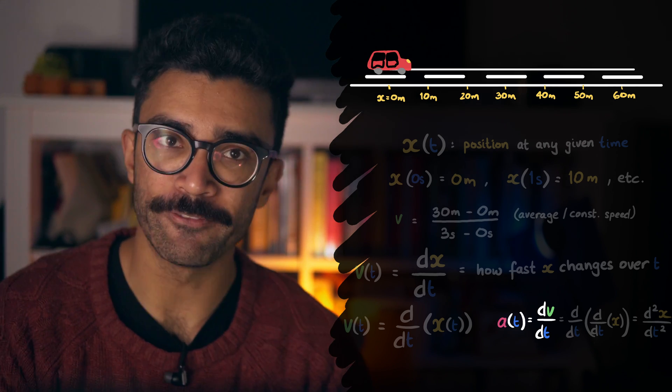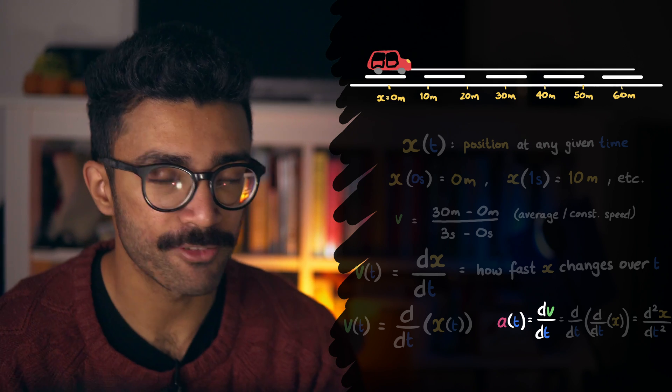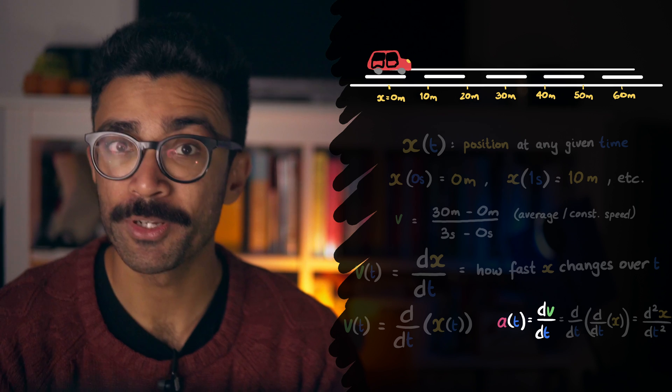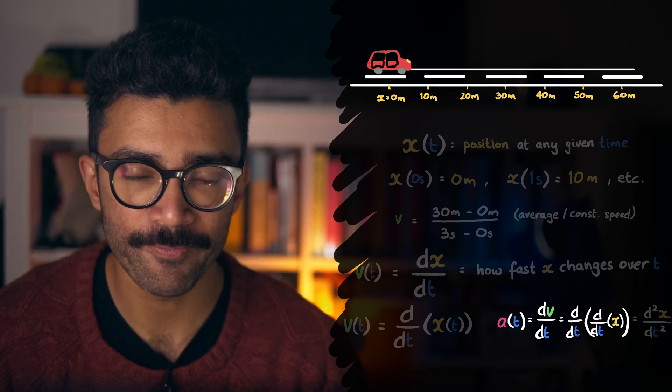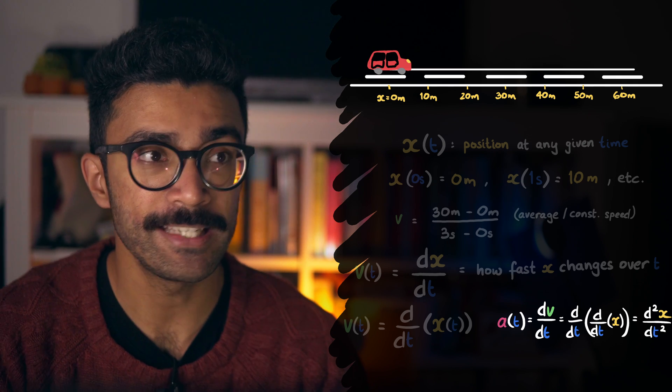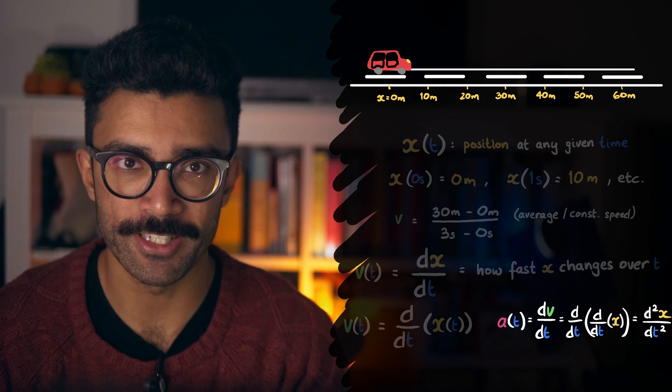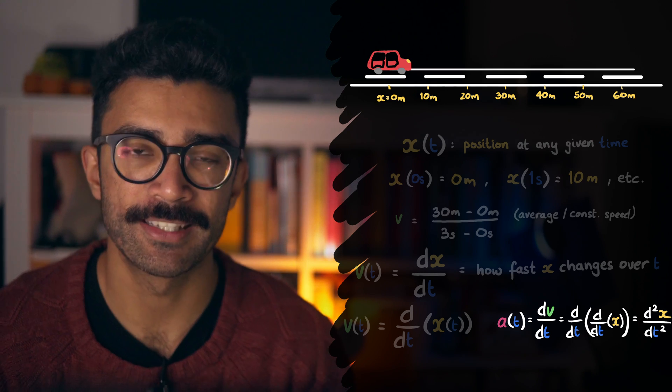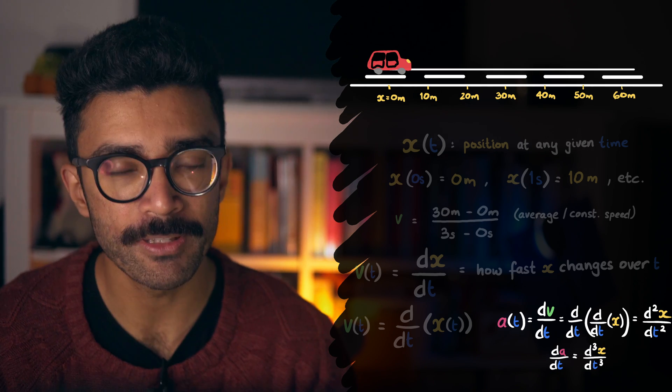We can write this as dv by dt. And we could also write this in terms of x rather than in terms of v. But we don't want to write d by dt of d by dt of x. So instead, we just write d²x by dt squared. All this means is that we're looking at the second derivative of x with respect to t. And the third derivative would be d³x by dt cubed, and so on.